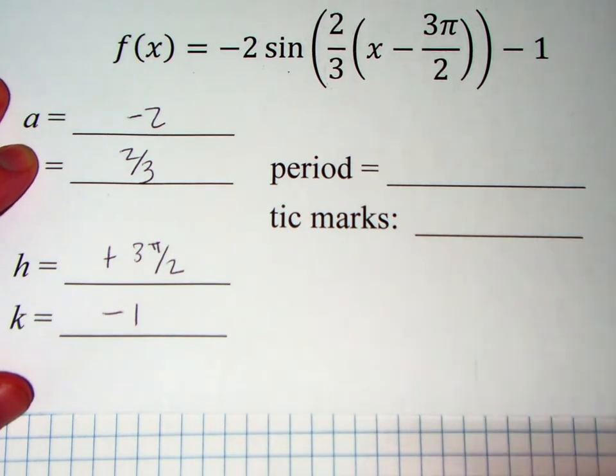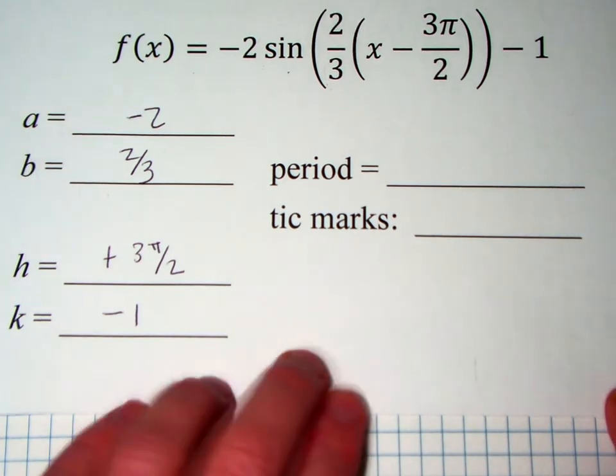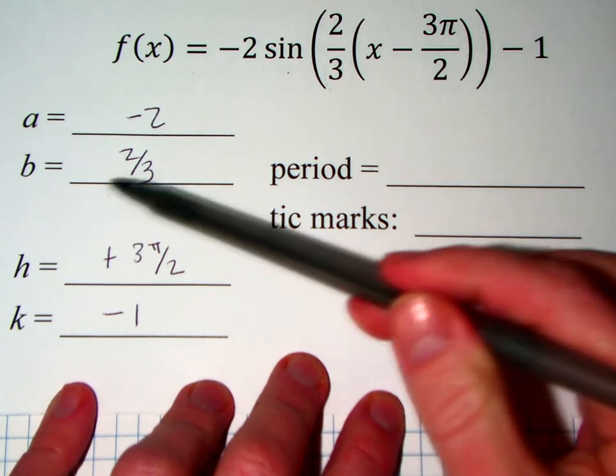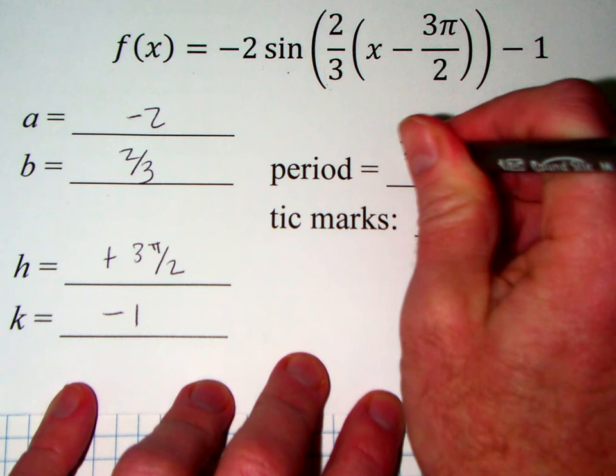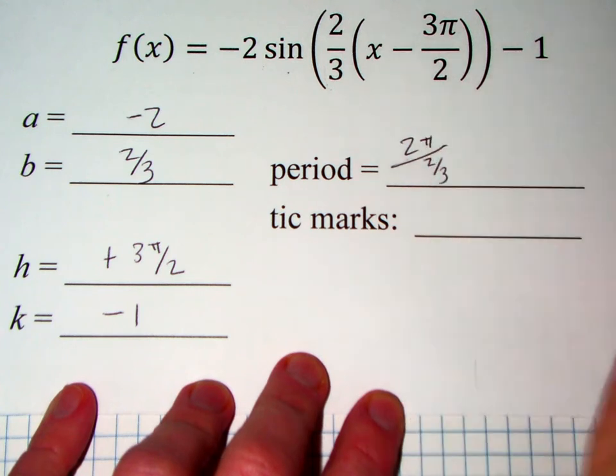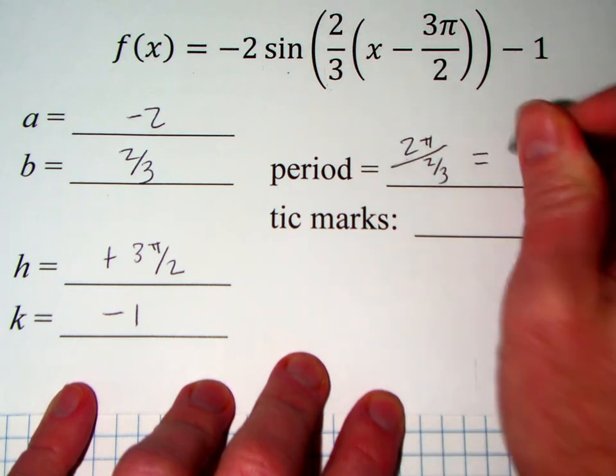Also before we really get going on the graph we need to figure out what the period is, and we do that by 2 pi over the b value, which in this case is 2 thirds. And we can simplify that to 3 pi.